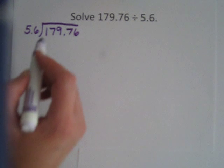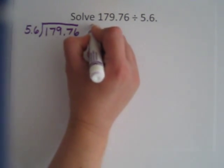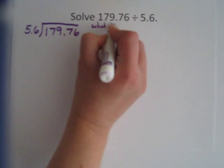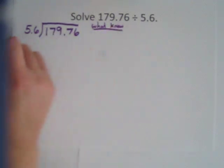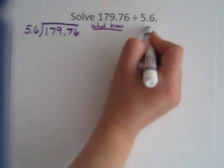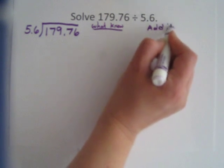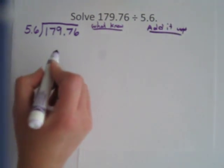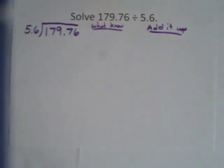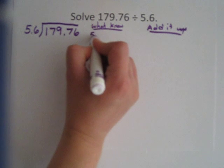So we're going to have what we know. I think I'm just going to solve it a little different. What we know over here because I don't have room over there, and then add it up over here. So what we know. We're going to right now ignore the decimals, and I'll show you what to do with those in the end.